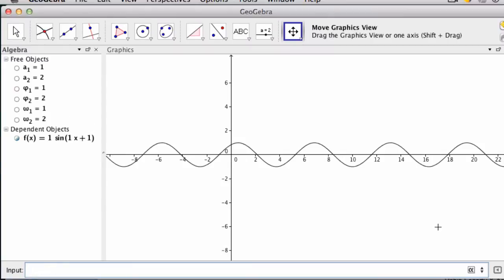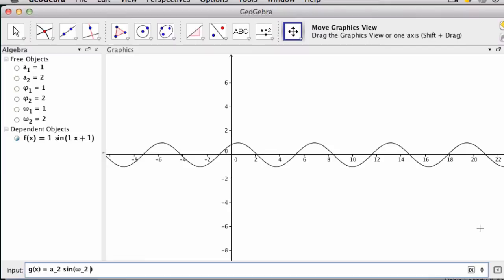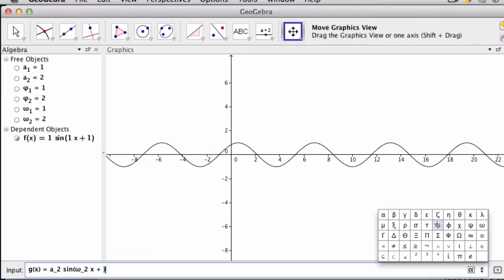Okay, now I'll set up another function. Let's say g of x equals a sub two times the sine of omega sub two, so omega sub two times x plus phi sub two. And I'm setting this up so we